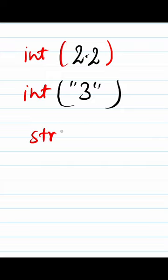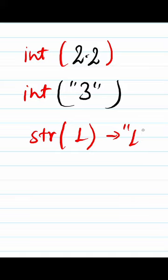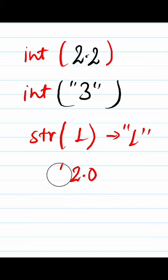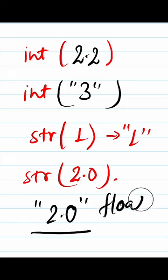And in the same way, you can convert to a string as well. If I write str(1), it will give us a string '1'. And if I write str(2.0) and do typecasting, then I'll get a string '2.0'. Similarly, you can typecast for float as well.